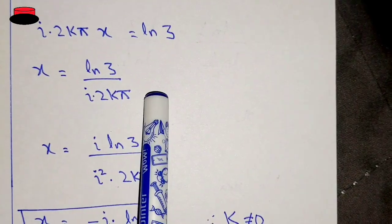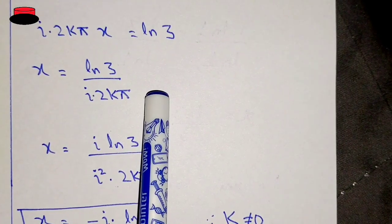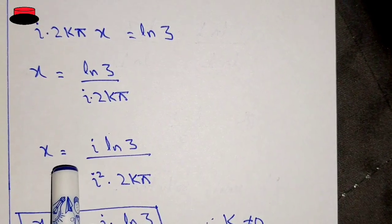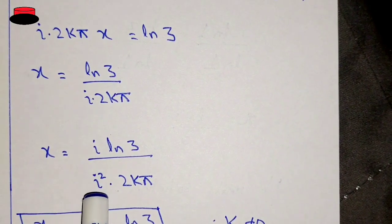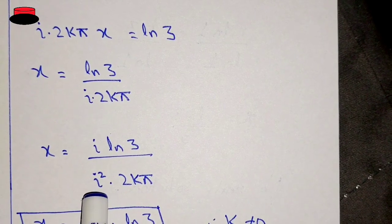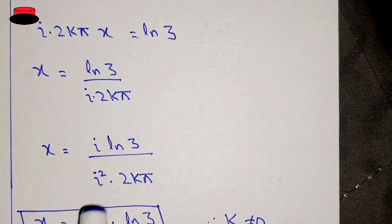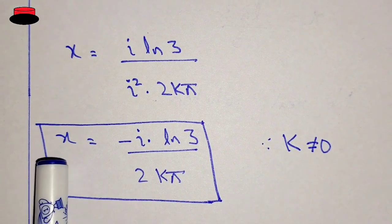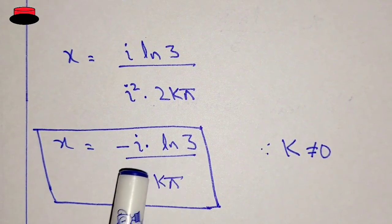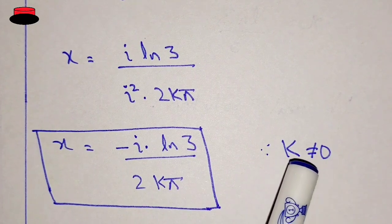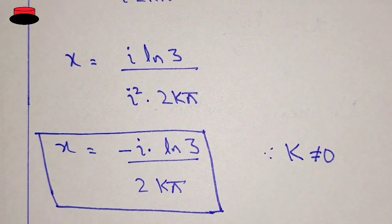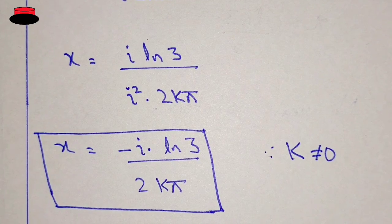Therefore x equals ln(3) divided by i·2kπ. To write this in standard form, we multiply by i on both sides, giving x equal to i·ln(3) divided by i²·2kπ. Since i² equals minus 1, the value of x equals minus i·ln(3) divided by 2kπ, where k is not equal to 0. I hope you understand, thank you for watching.